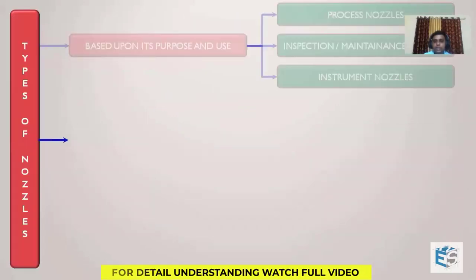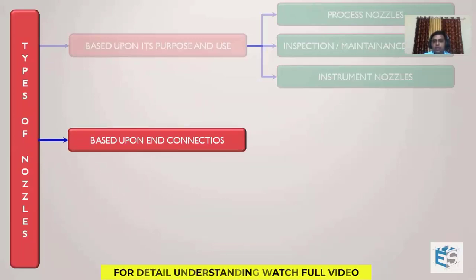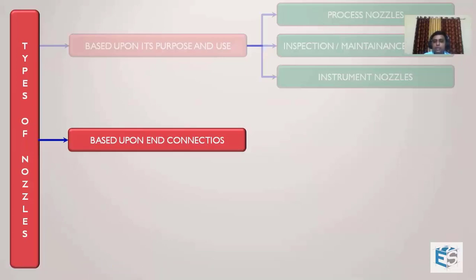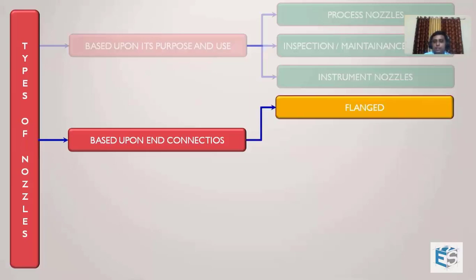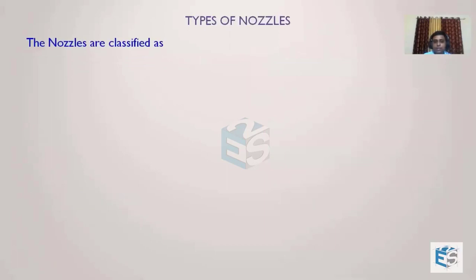We are going to see the next category based upon the end connection — the way the nozzle is getting connected with other piping components. Based upon the connections, the configurations are: flange connection, threaded connection, and welded connection. Let's see when to go for each one.